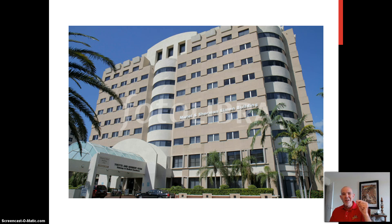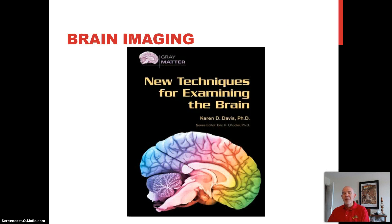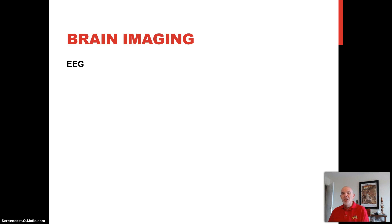We still don't know very much about the brain, but these brain imaging techniques include the EEG, or electroencephalograph, the CAT scan, computerized axial tomography, the MRI, magnetic resonance imaging, and I'm going to go over each one of these, show you some pictures, and tell you more about it. PET scan, positron emission tomography, and the functional MRI.